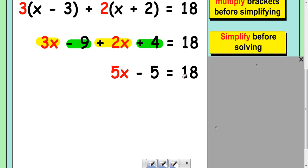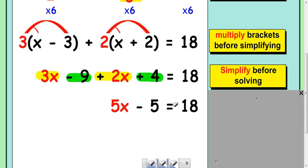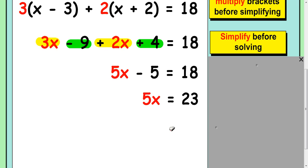So now it's a simple equation to solve because you've eliminated the fractions and you've multiplied out the brackets and then simplified it down. So add on the 5 to both sides. 5x is 23, and then divide by 5. So x is 23 over 5, and I would change that into a mixed number.